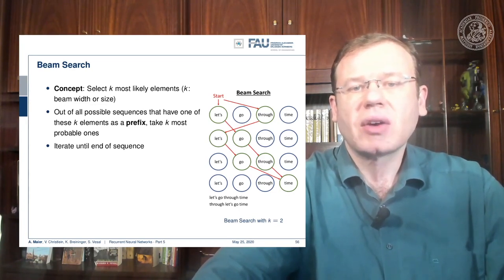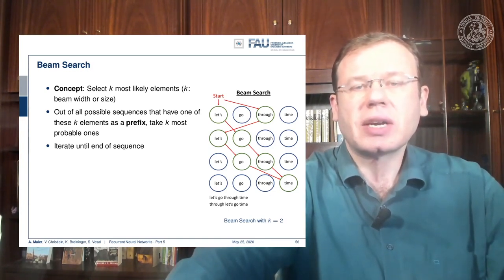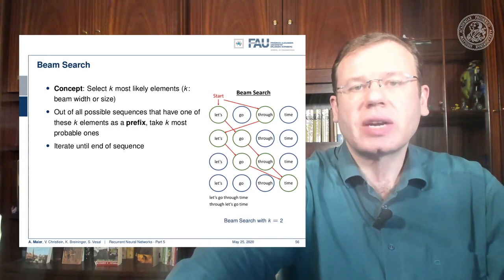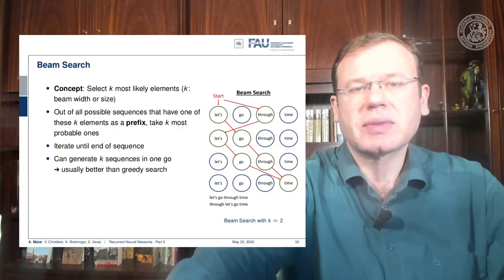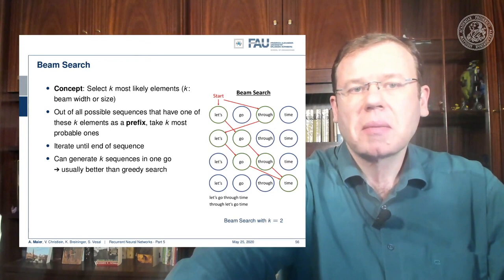With our beam of size two, we can keep the two most likely sequences in the beam search. Now we generate two sequences at a time: one is 'let's go through time' and the other one is 'through let's go time.' We can use this beam idea to generate multiple sequences and determine which one generated the most total probability. This is one of the most common techniques to sample from an RNN.